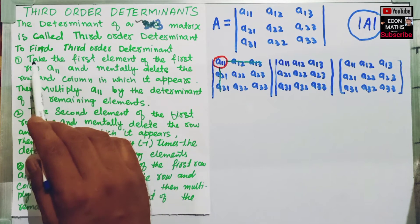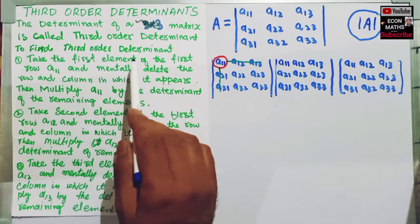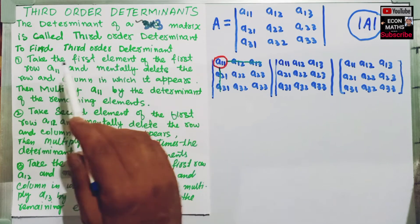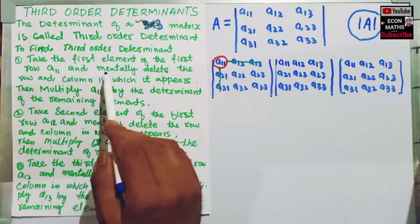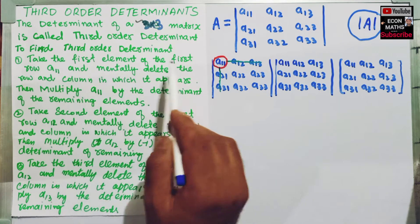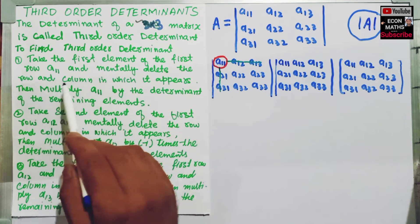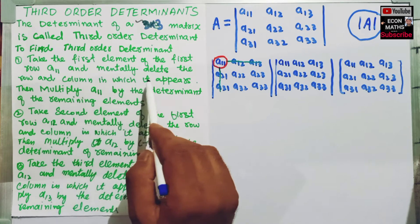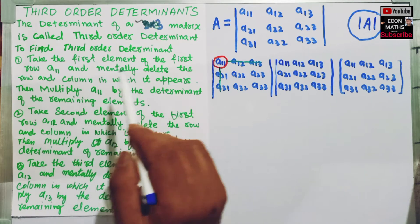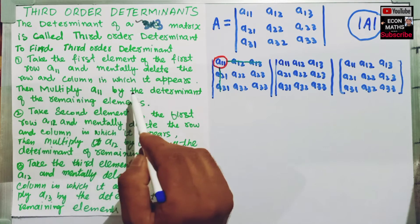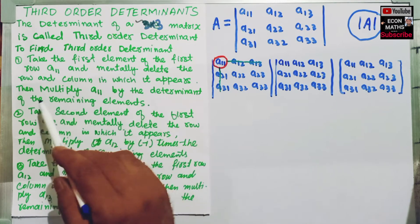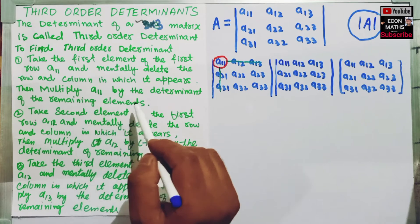The first step is to take the first element of the first row, A11, and mentally delete the row and column in which it appears. Then multiply A11 by the determinant of the remaining elements.